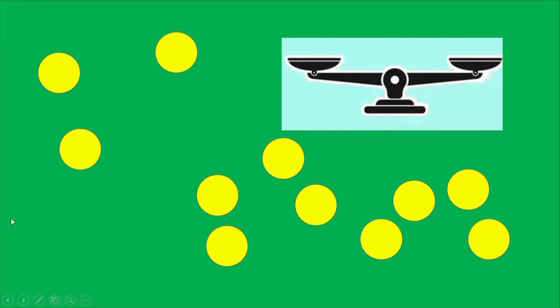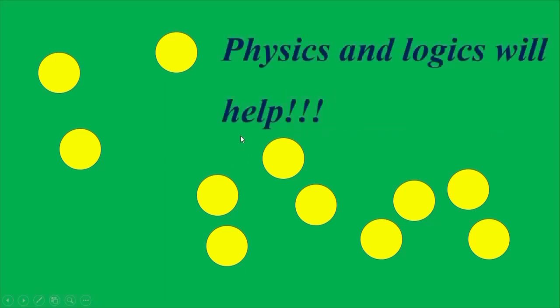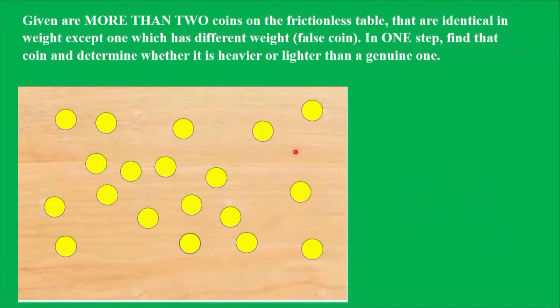In this video, it is shown how to identify the false coin among any number of coins without using a balance. At first sight, it is absolutely impossible, but physics and logic will help. Let's go. First, we formulate the problem.